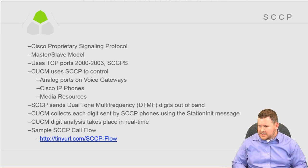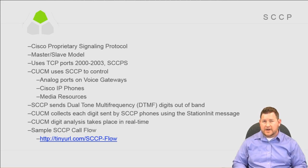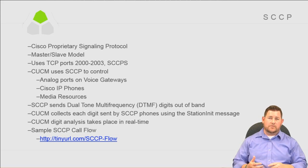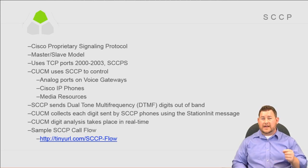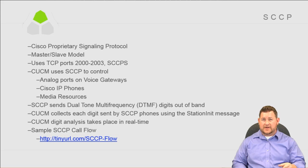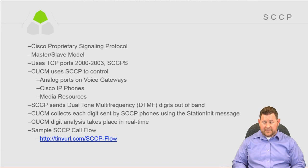You can look at the CUCM SDI logs and search on a station init message to find key presses — an excellent troubleshooting point to see what happens when a phone presses digits one by one. The other scenario is when a Skinny phone dials digits without going off hook and then hits the dial key — at that point, digits are sent in block all at once. You can see all of that in traces when you pull up a trace and search for the station init message.